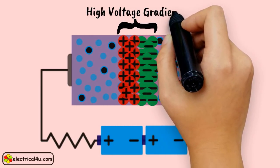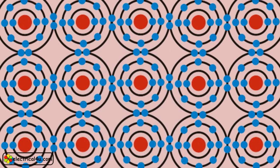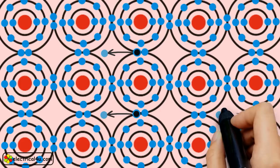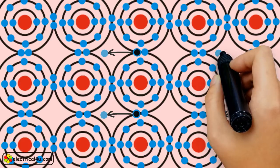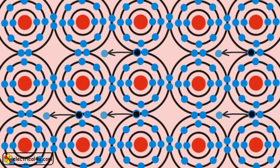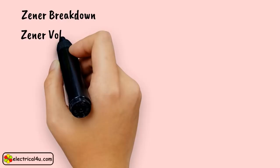Due to this thinner depletion layer, the voltage gradient or electric field strength across the depletion layer is quite high. If the reverse voltage continues to increase after a certain applied voltage, the electric field strength across the PN junction becomes so strong that electrons from the parent impurity ions come out and make the depletion layer conductive. This breakdown is called Zener breakdown.